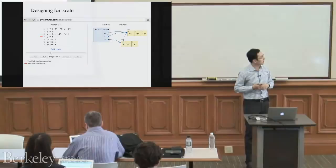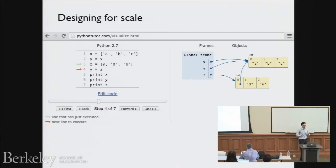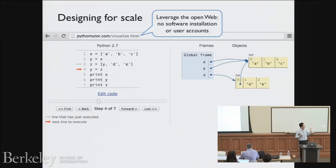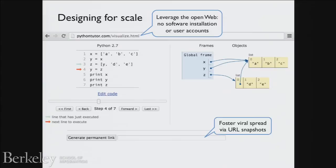Thinking about designing for scale, there are a few main high-level design points. The first is to leverage the open web — because this is on the web, it's super easy to use. There are no user accounts and no installation of anything. Having no account is a big impediment to usage — it probably cuts usage down 10x or more. Without user accounts, you can just go on and write code.